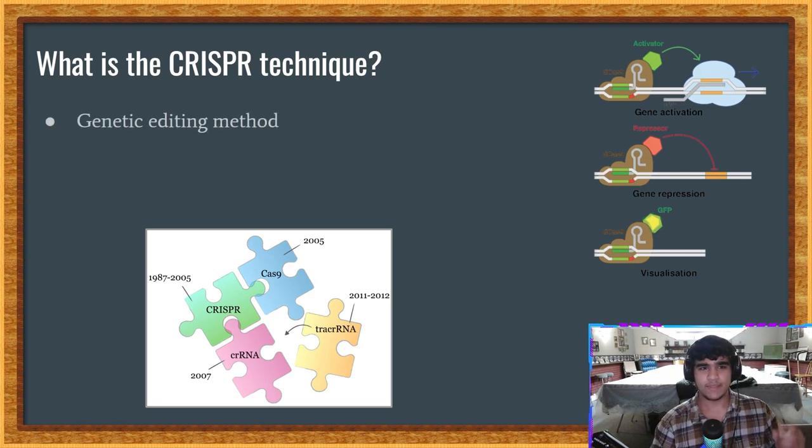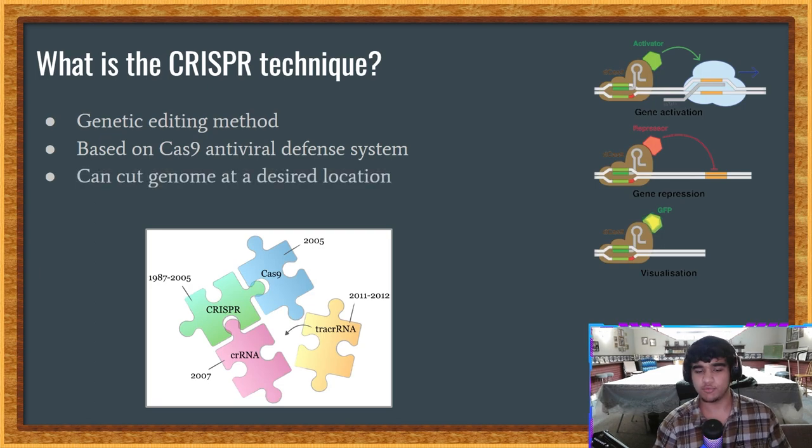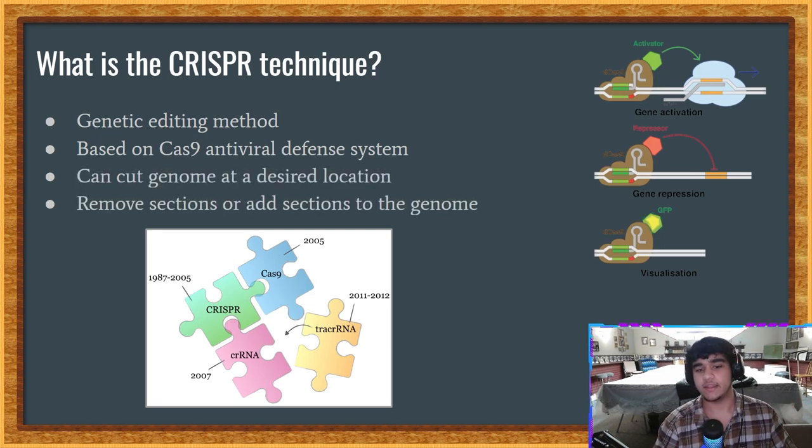Essentially, by delivering the Cas9 nucleases complexed with a synthetic guide RNA or gRNA into a cell, the cell's genome can be cut at a desired location, which allows existing genes to be removed or new ones to be added, which is pretty cool.